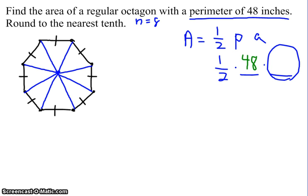Let's back up for just a second. Since the perimeter was 48 and there's eight sides, I know that all sides are six units long.